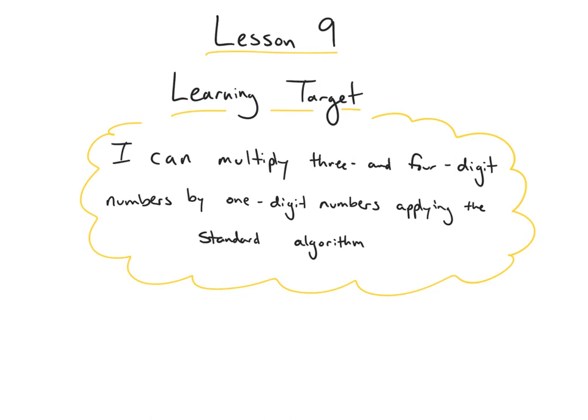This is a video lesson from Module 3, Lesson 9. The Lesson 9 learning target is: I can multiply three and four-digit numbers by one-digit numbers, applying the standard algorithm. Today we're going to be talking about the standard algorithm, which is probably one of the most popular ways that people multiply multi-digit numbers. We're going to be connecting the standard algorithm to two of our strategies we've been using in the last few lessons: the place value chart and place value disks method, and partial products.